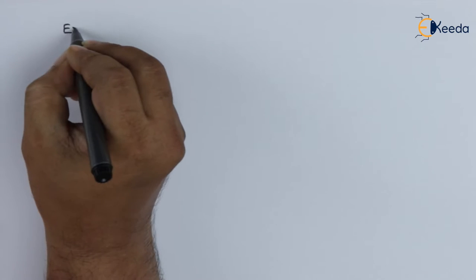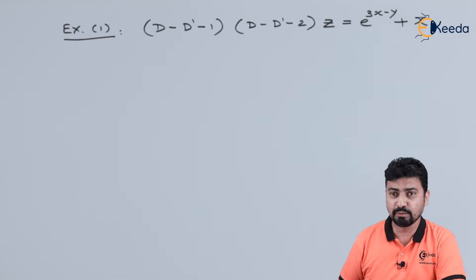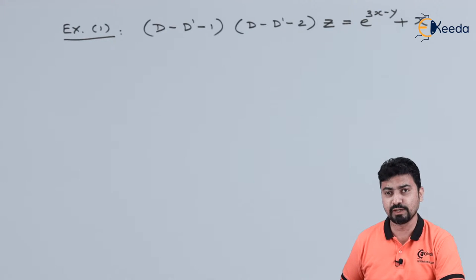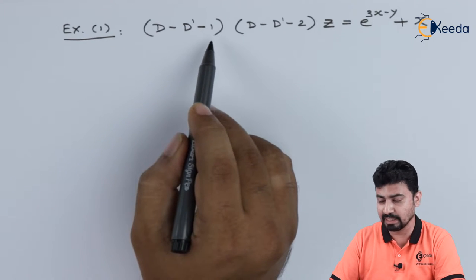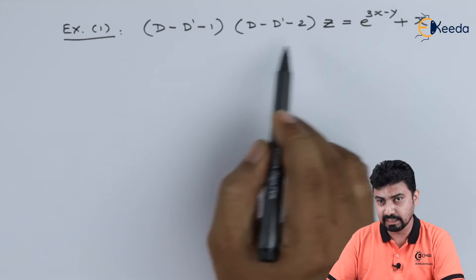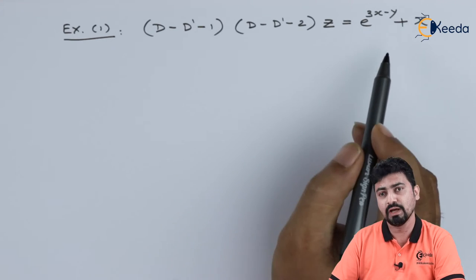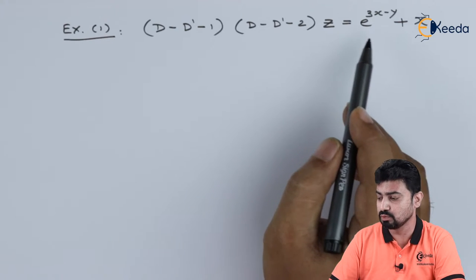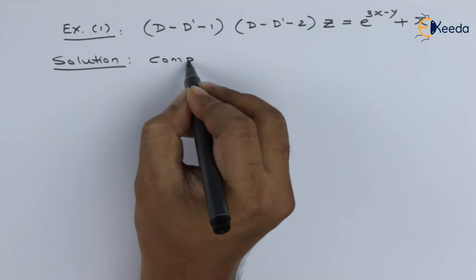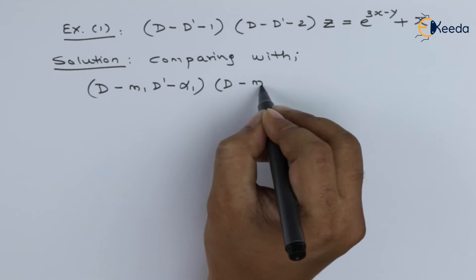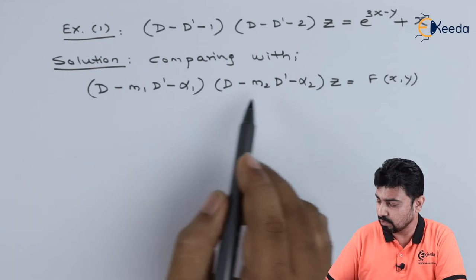Let us take an example to understand this method. The first example for a non-homogeneous linear partial differential equation is: (D − D' − 1)(D − D' − 2)z = e^(3x − y) + x. Let us compare this with the standard form we derived. On comparing the left-hand side, we get the values of m₁, α₁, m₂, and α₂.